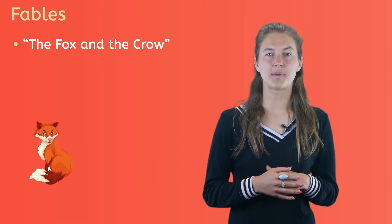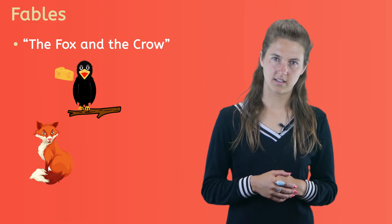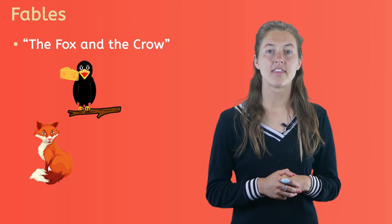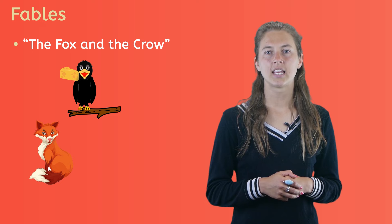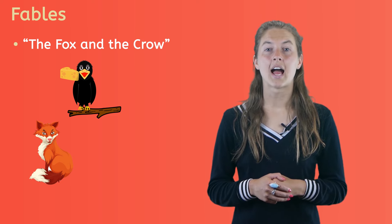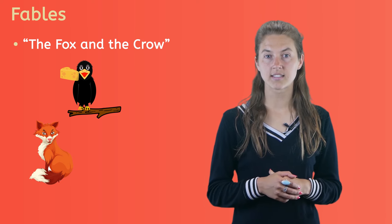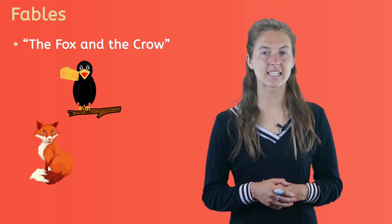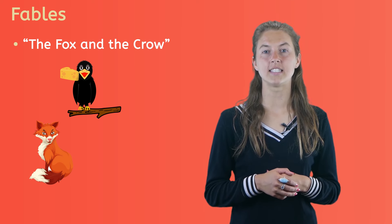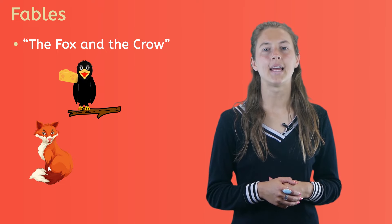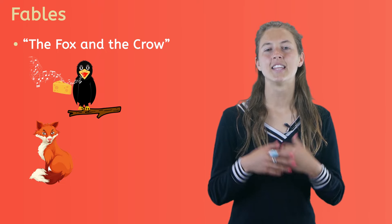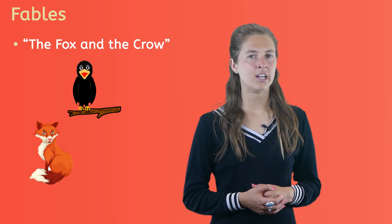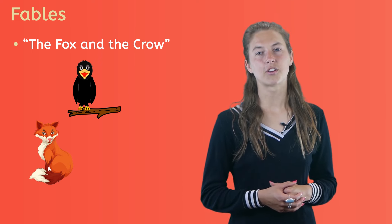You see, the fox really wants the piece of cheese the crow is eating. So he tells the crow how handsome and how smart he is. Then the fox tells the crow he doesn't believe the crow has the best song in the forest, as everyone claims. The crow decides to sing to show the fox he does have the best voice. But he opens his beak to sing. The cheese drops into the hungry fox's mouth. So, what do you think the crow learned?